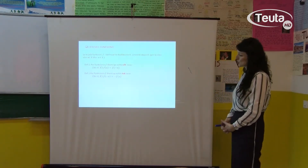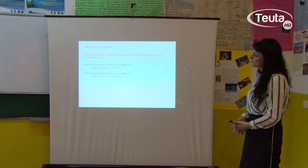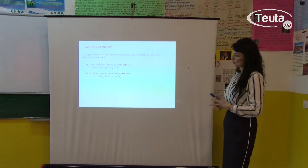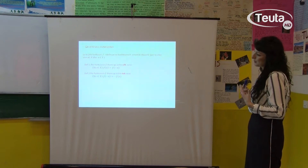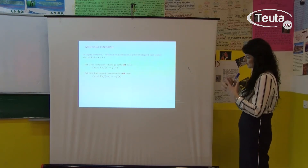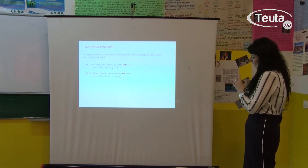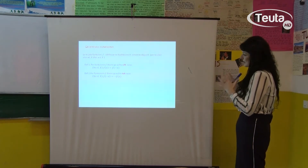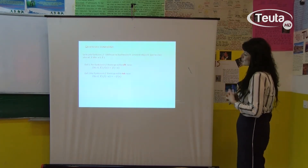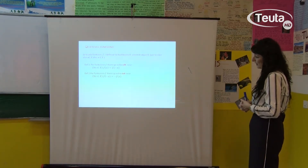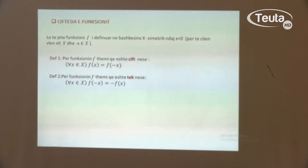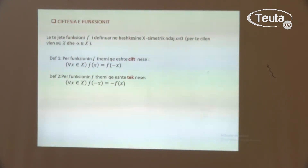Vetia e radhës është qiftësia e funksionit. Flasim për qiftësinë e funksionit, flasim për një veti karakteristike të atij funksioni. Le të kemi një funksion f i cili është definuar në një bashkësi x, i cili ka edhe elementin simetrik ndaj zeros. Atëherë, definicioni i parë thotë: për funksionin f themi që është funksion qift, në qoftëse për çdo x nga zona e definimit, vlen që f(x) është i njëjtë si f(-x).